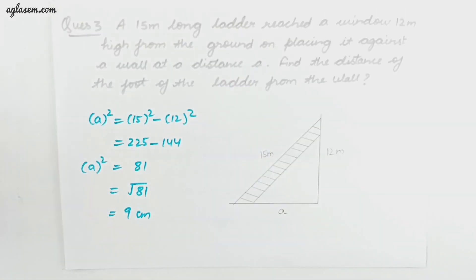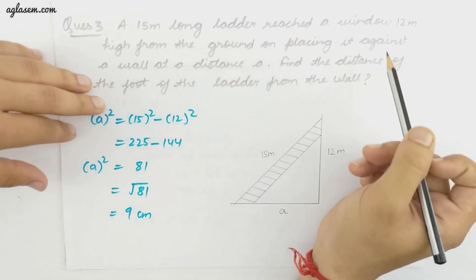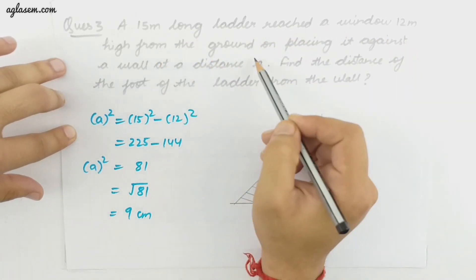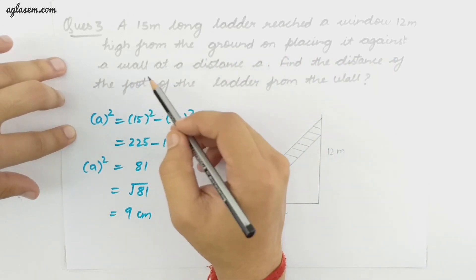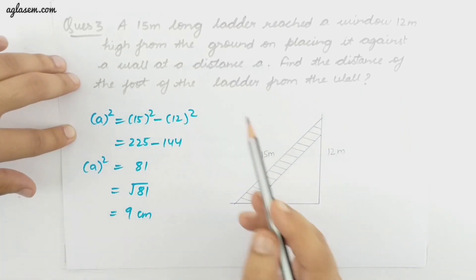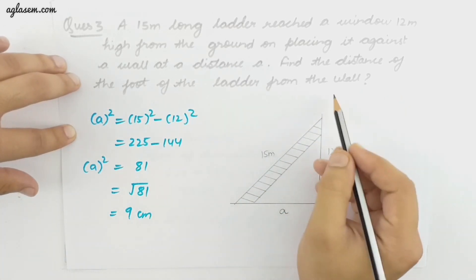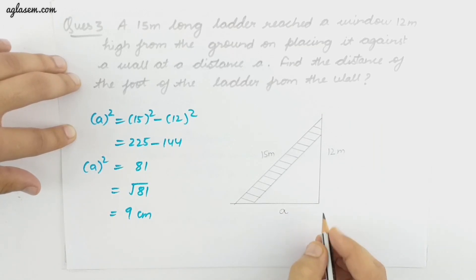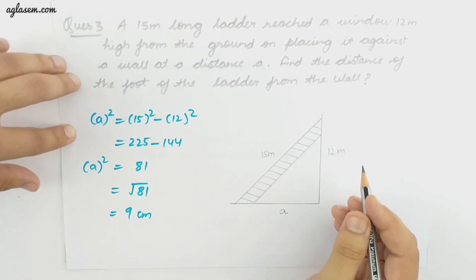Question number 3: A 15 meter long ladder reached a window 12 meter high from the ground on placing it against a wall at a distance. Find the distance of the foot of the ladder from the wall. We have to find A, and we will use the Pythagoras property.